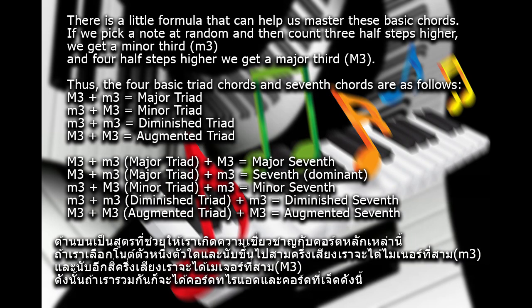There is a little formula that can help us master these basic chords. If we pick a note at random and then count three half steps higher, we get a minor third. And four half steps higher, we get a major third.